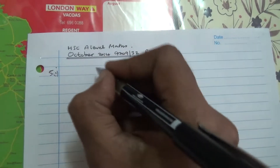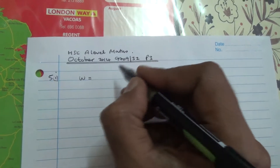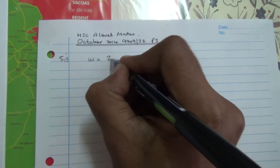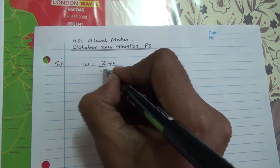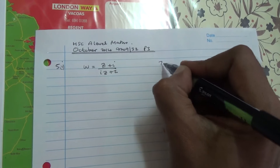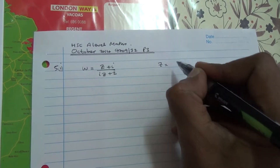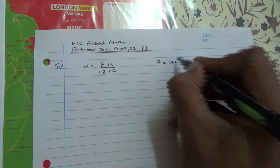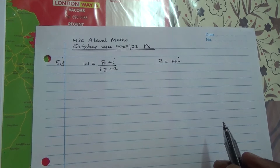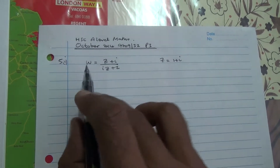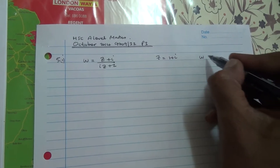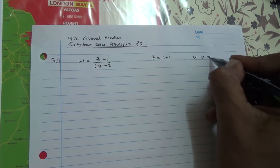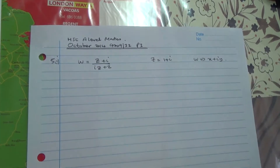The complex numbers W and Z satisfy the relation W equals Z plus i over iZ plus 2. For the first part, given that Z equals 1 plus i, find W, giving your answer in the form X plus iY, where X and Y are real.